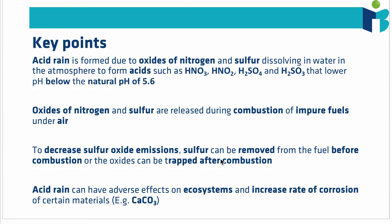So the key points from this video: acid rain is formed due to oxides of nitrogen and sulfur dissolving in water in the atmosphere, producing acids that lower the pH of rain below the natural pH of 5.6. These oxides come mainly from combustion — sulfur oxides from impure fuels containing sulfur, and nitrogen oxides from combustion in air generally. To decrease sulfur oxide emissions, we can either clean the fuel pre-combustion or trap the sulfur oxides post-combustion. Finally, acid rain has adverse effects on ecosystems and increases the rate of corrosion of materials that react with acids.